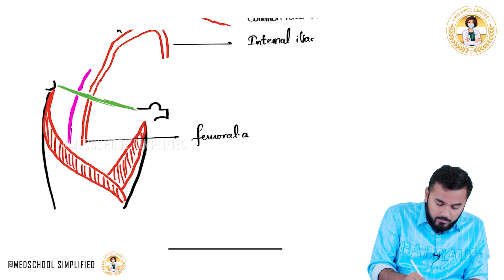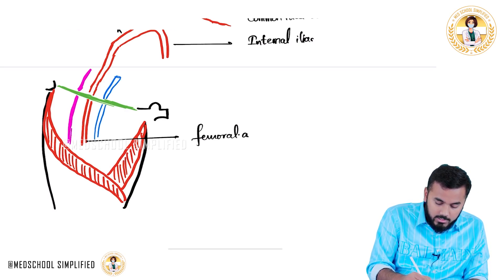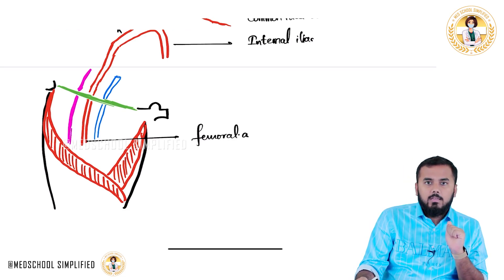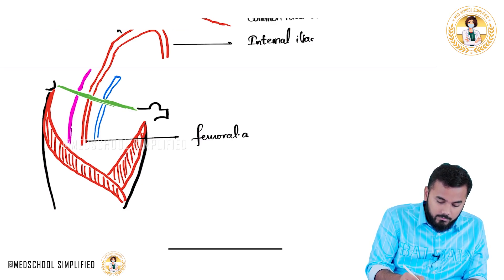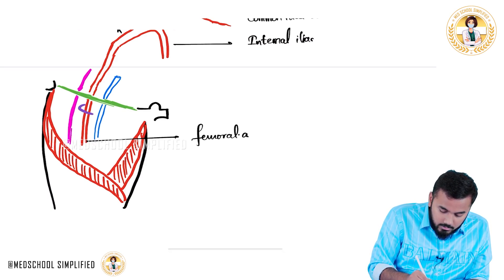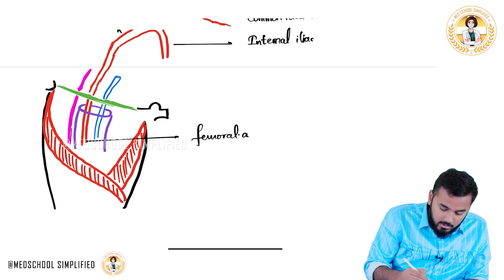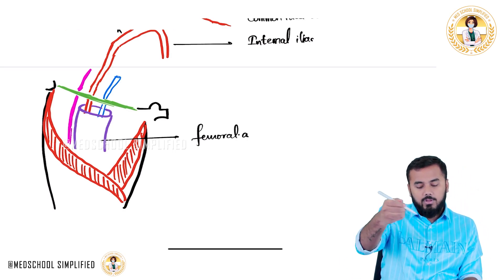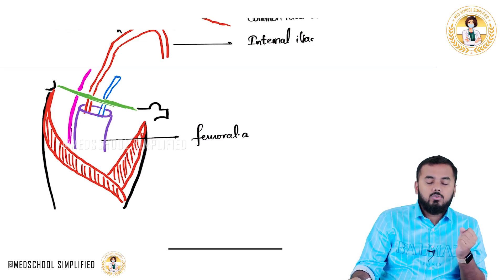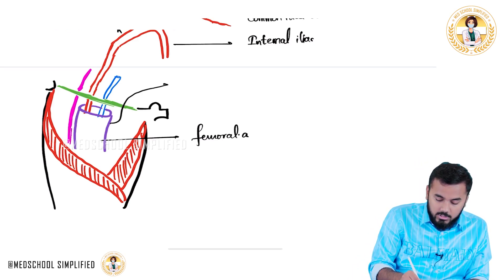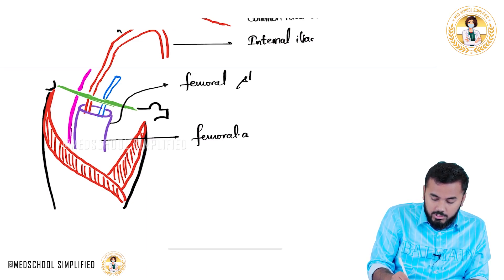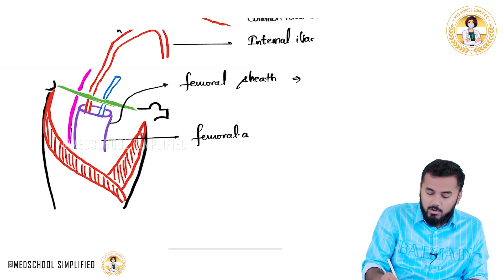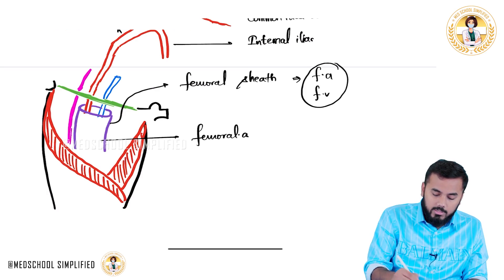We also have the femoral vein running alongside. Now, there is a very important structure called the femoral sheath, which encloses the femoral artery and femoral vein. This femoral sheath is very important for your exams.